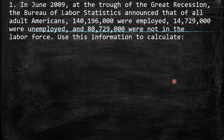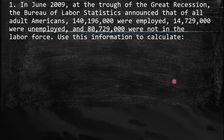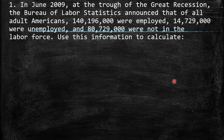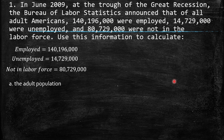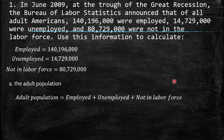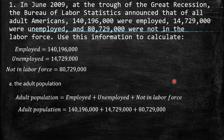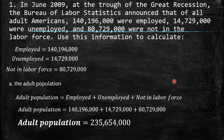In June 2009, through the Great Recession, the Bureau of Labor Statistics announced that of all adult Americans, a certain amount were employed, another number were unemployed, and another were not in the labor force. I recommend you write down the numbers and information available to answer this question. The adult population is just the sum of employed plus unemployed plus not in labor force, and we end up with 235,654,000 people in the adult population.